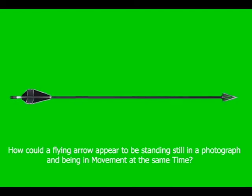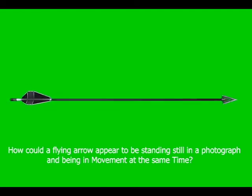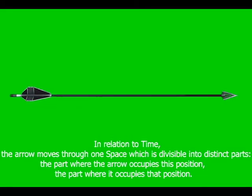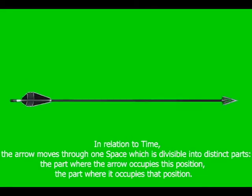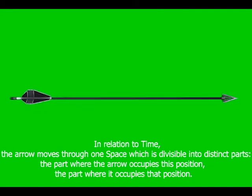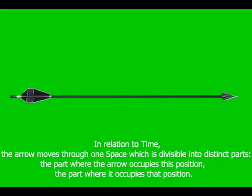How could a flying arrow appear to be standing still in a photograph and being in movement at the same time? In relation to time, the arrow moves through one space which is divisible into distinct parts: the part where the arrow occupies this position, the part where it occupies that position.